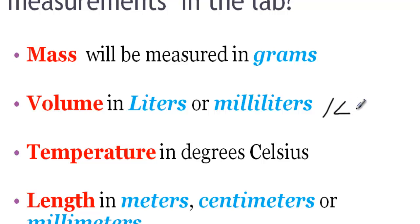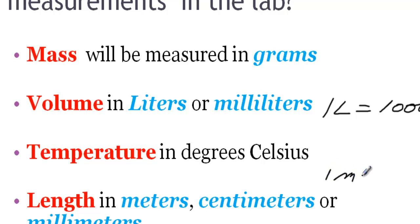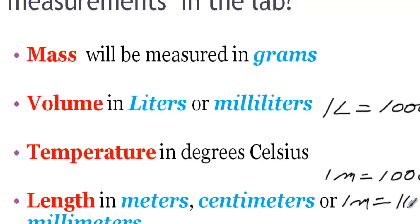One liter equals one thousand milliliters. One meter contains one hundred centimeters — centimeter means one hundredth. And one meter has one thousand millimeters.